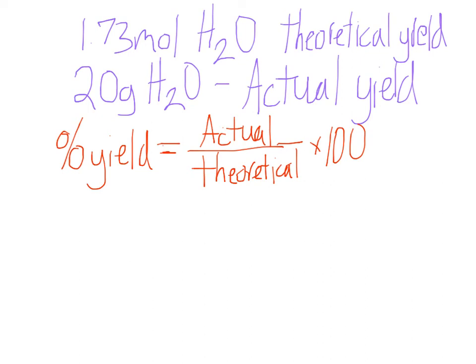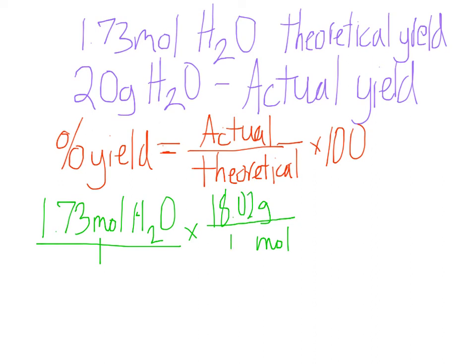Remember it doesn't matter which one you do. So 1.73 moles of water divided by 1 times moles, grams. So 18.02, 1 mole. Remember that's just the molar mass. And it comes out to be 31.17 grams of water. So that is your theoretical yield.